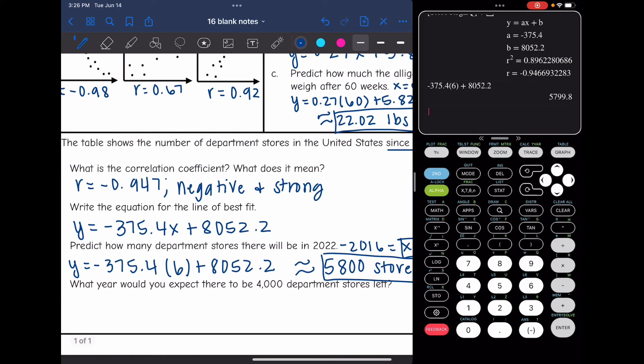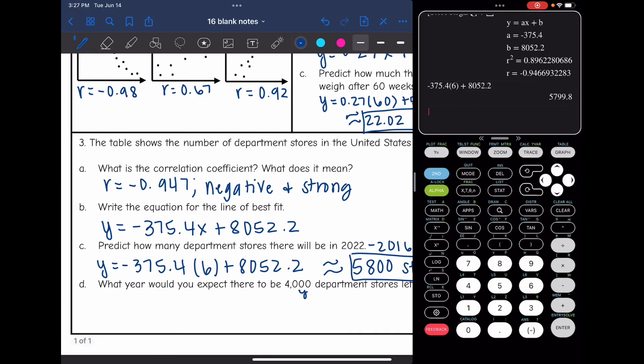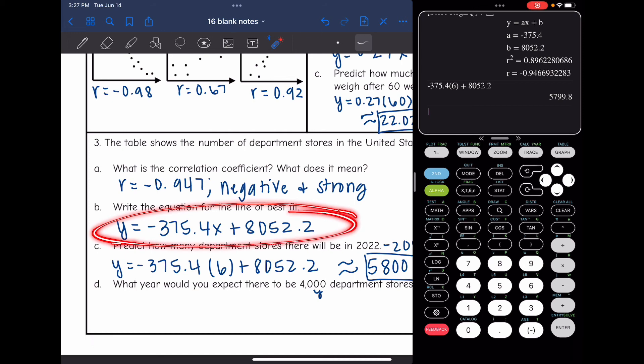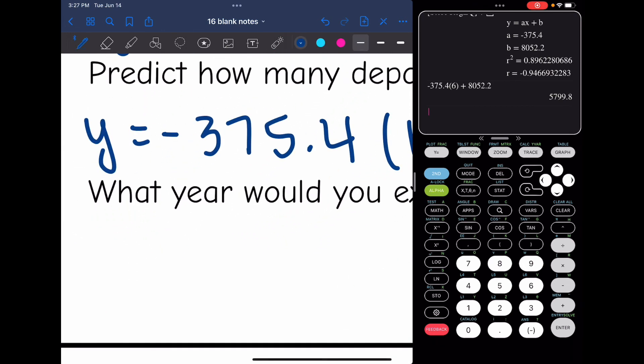And then it says, what year would you expect there to be 4,000 department stores left? So this time we're going to be solving for the year. They gave us the number of stores, which is y. So I'm going to use this equation, but I'm going to replace y with 4,000. So the equation would be 4,000 equals negative 375.4x plus 8,052.2.